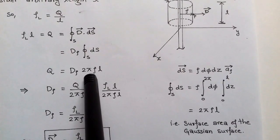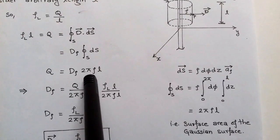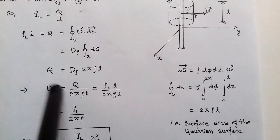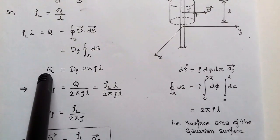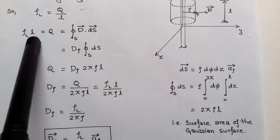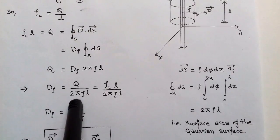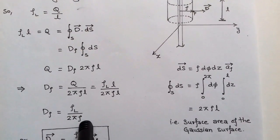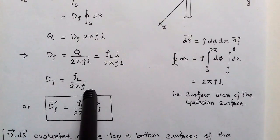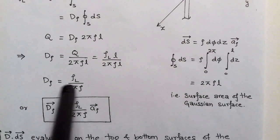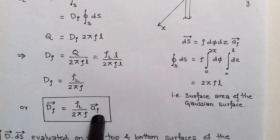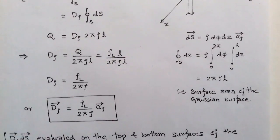Substituting Q = ρl · l and the surface area 2πρl, the l cancels and we get D_ρ = ρl / (2πρ), where ρ is the radius of the cylinder and ρl is the line charge density. In vector form, D = (ρl / 2πρ) â_ρ.